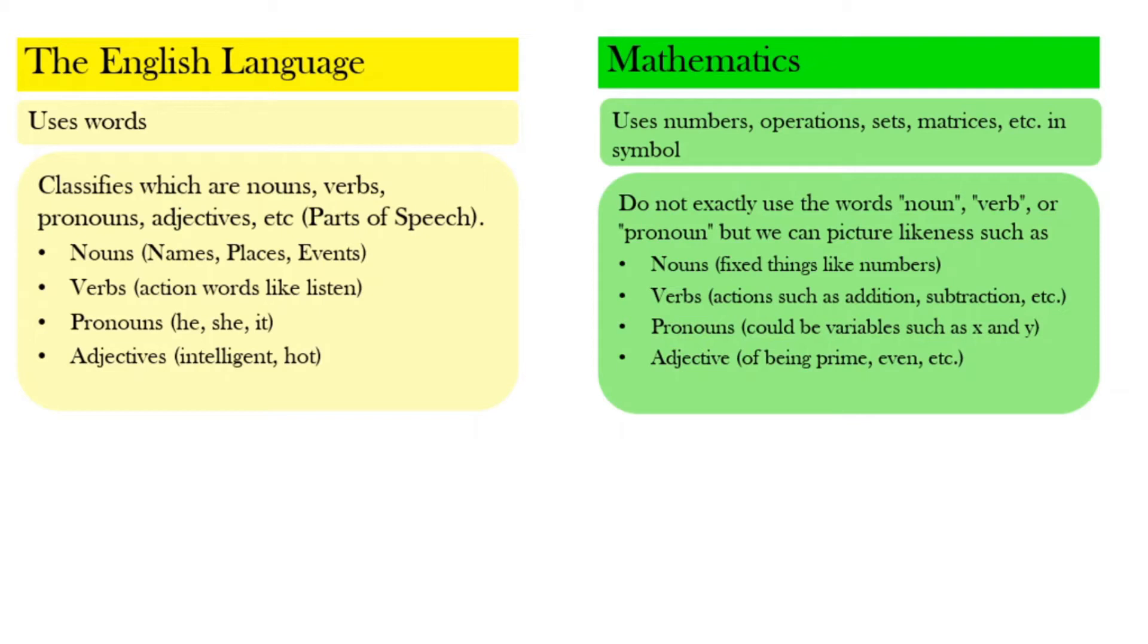We can actually identify likeliness such as numbers, they could be our nouns, our different operations such as addition and subtraction for our verbs, and variables to counterpart our pronouns. We even have something that describes numbers like being prime or even. A number can either be prime or even or odd or amicable.